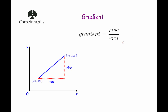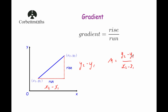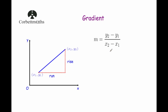For AS Maths or Level 2 Further Maths, it can be useful to use a more formal version of this formula. So instead of writing rise divided by run, we write y2 minus y1 for the rise and x2 minus x1 for the run. That gives us the gradient: m equals y2 minus y1 divided by x2 minus x1. This formula is quite useful, especially when you are given the gradient and trying to work out a missing x or y coordinate.